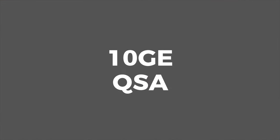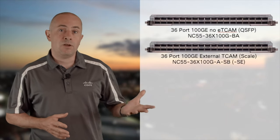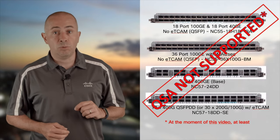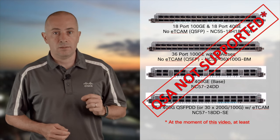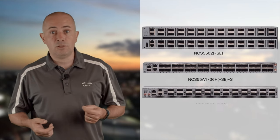A third 10G option is QSA — QSFP to SFP adapter — allowing SFP and SFP+ insertion in a QSFP cage. Though it seems like a waste of resources, it makes sense to avoid acquiring an extra device for just a few 1G/10G ports, or when you need reach beyond 40km over dark fibre. QSA is supported on the 36x100G SC and non-SC, 24x100G SC, 24H-12F-SC combo card, 5502-SC, 55A1-36H-SC, and 55A1-24H. It is not supported on the 18H-18F, MACsec card, or DD line cards. Check the compatibility matrix for subtleties like non-support of Dash-S optics.